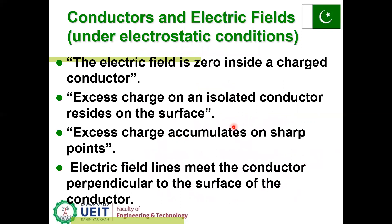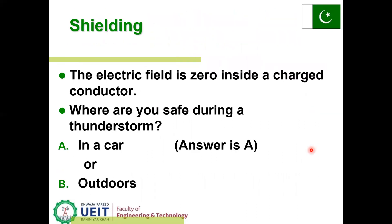Conductor and electric field: under electrostatic conditions, the electric field is zero inside a charged conductor. Excess charge on an isolated conductor resides on the surface. Excess charge accumulates on sharp points. Electric field lines meet the conductor perpendicular to the surface of the conductor. In a Faraday cage or elevator, the electric field is zero inside a charged conductor.